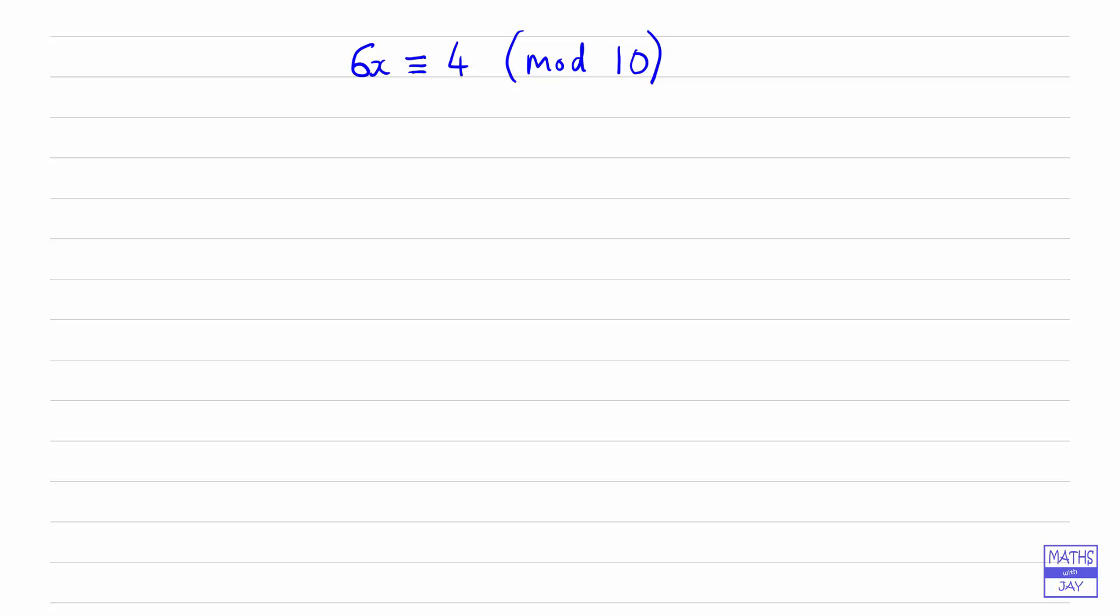Now let's just have a look if we write this just like an equation instead of as a congruence. So that means we're going to say we've got 6x is equal to 4 plus a multiple of 10. The important thing here is that the x and the k are integers. So what we can do here is we can just divide through by the common factor. So instead of 6x we get 3x, instead of 4 we get 2, and instead of 10k we get 5k.